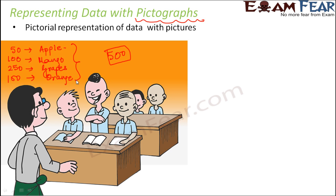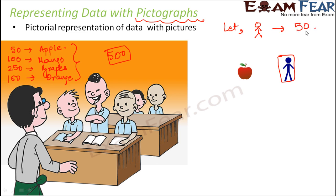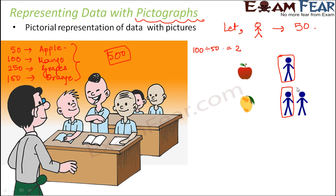We have to represent this data using pictograph — using pictures. One good way is that we say apple is liked by this picture symbol. Now does this picture, which shows one person, mean that apple is liked by one person? No. So what we assume is that one such symbol represents 50 people, meaning apple is liked by 50 people. How many people like mango? Mango is liked by 100 people. One symbol represents 50, so 100 divided by 50 equals 2 — therefore 2 such symbols represent 100.